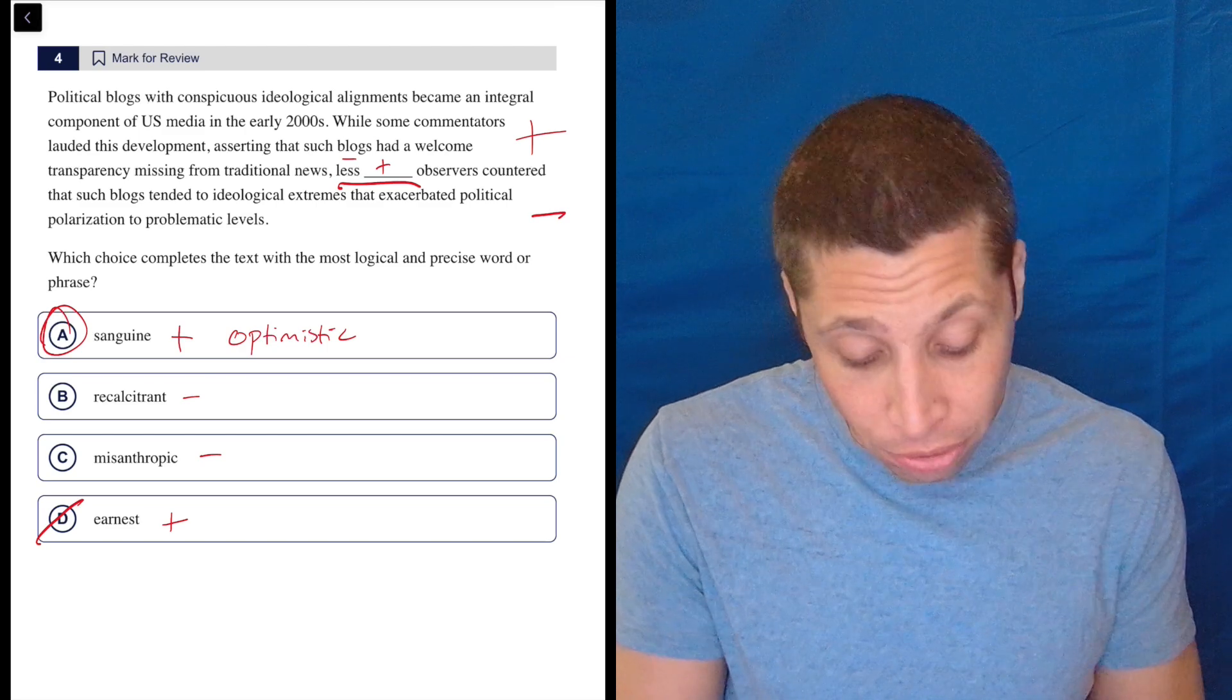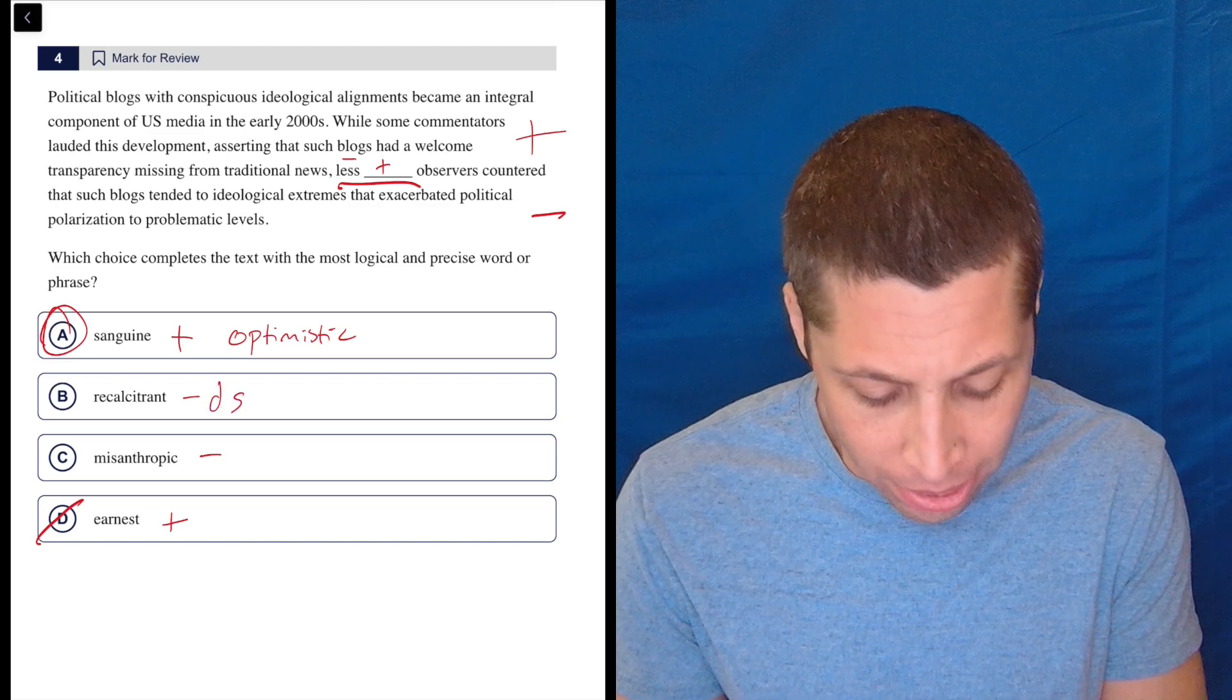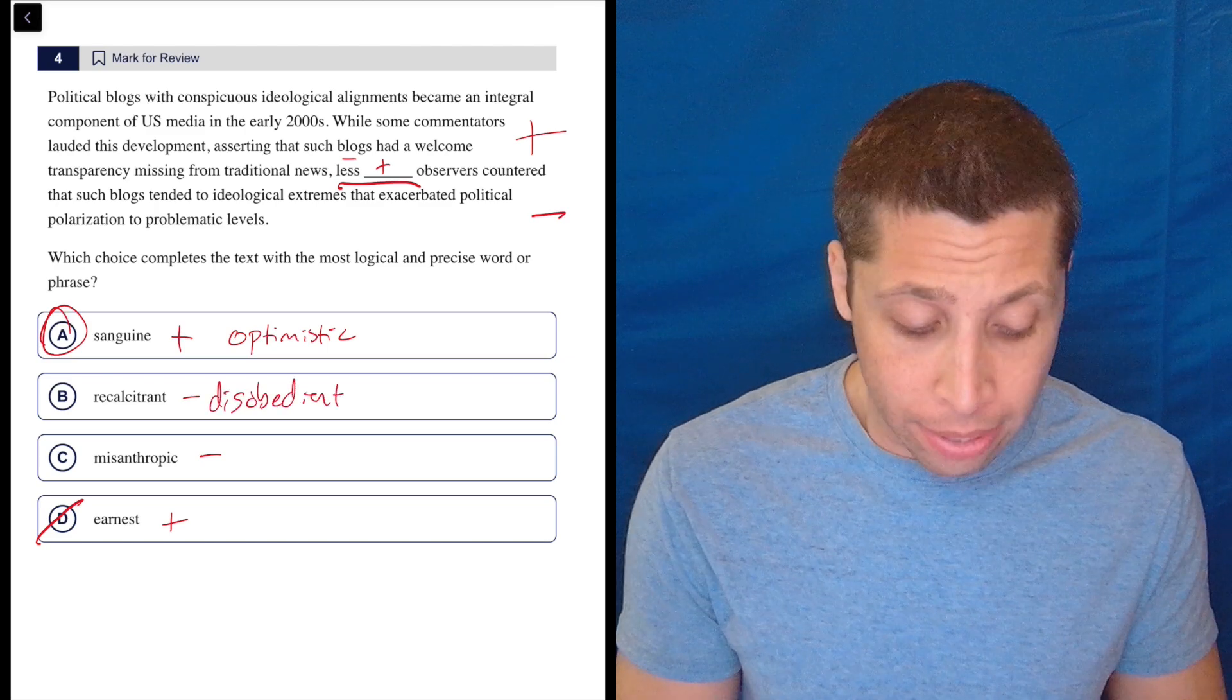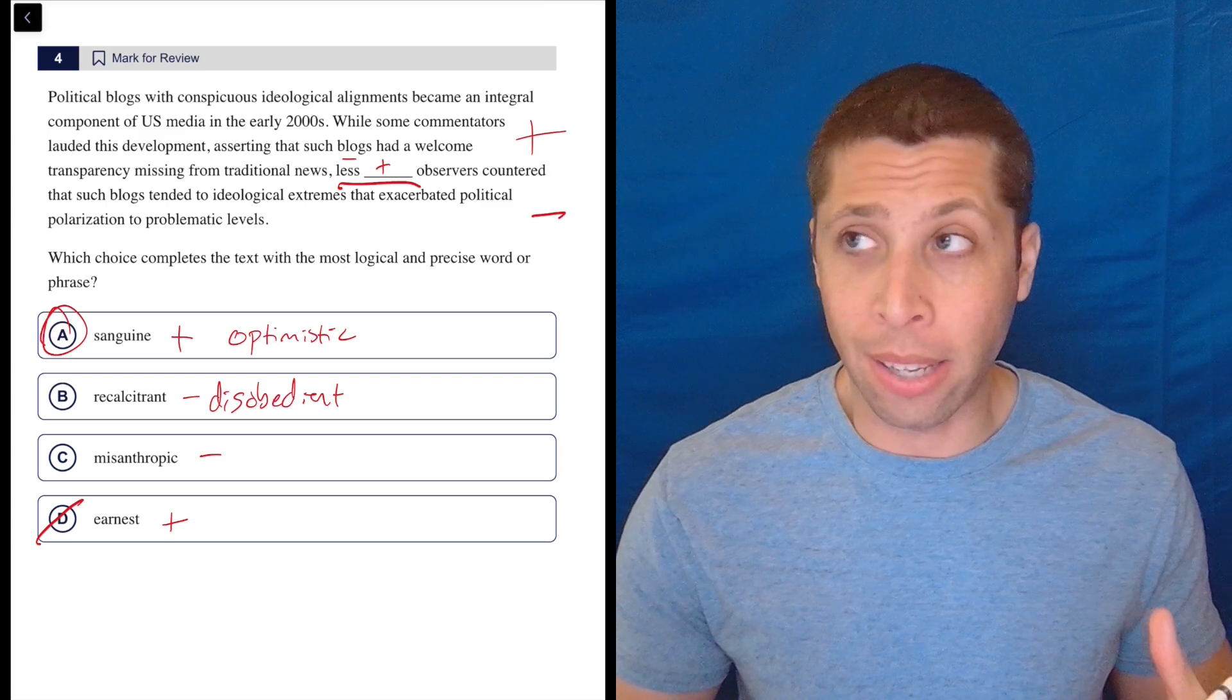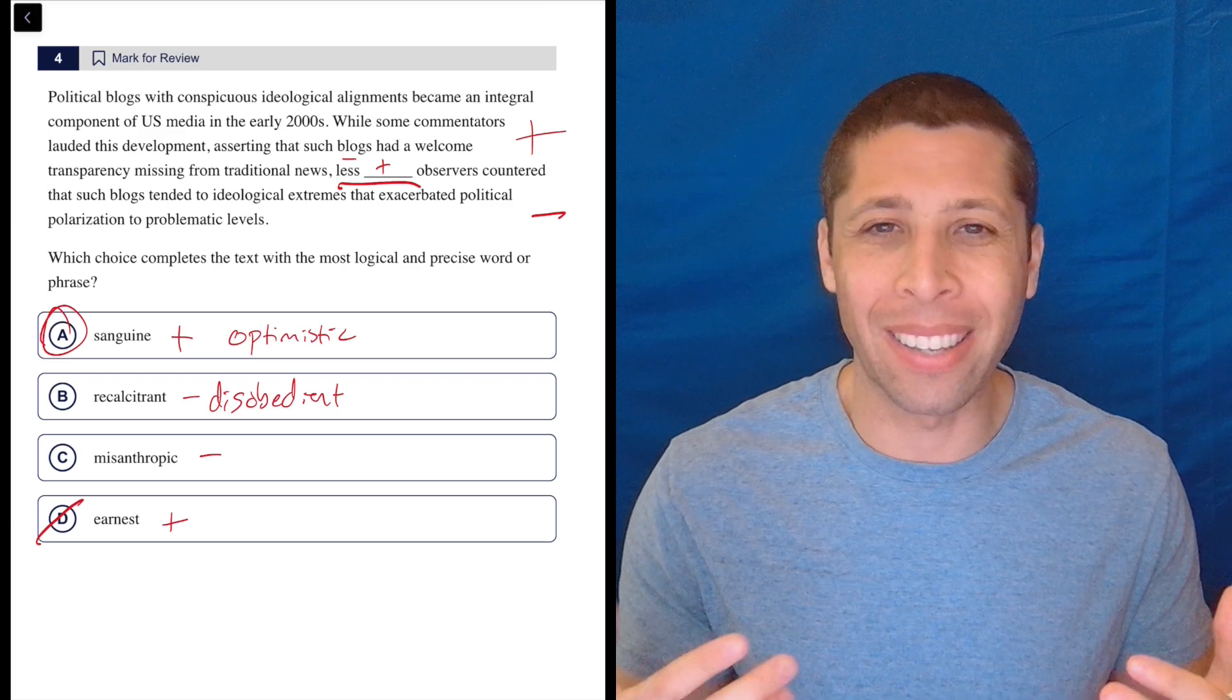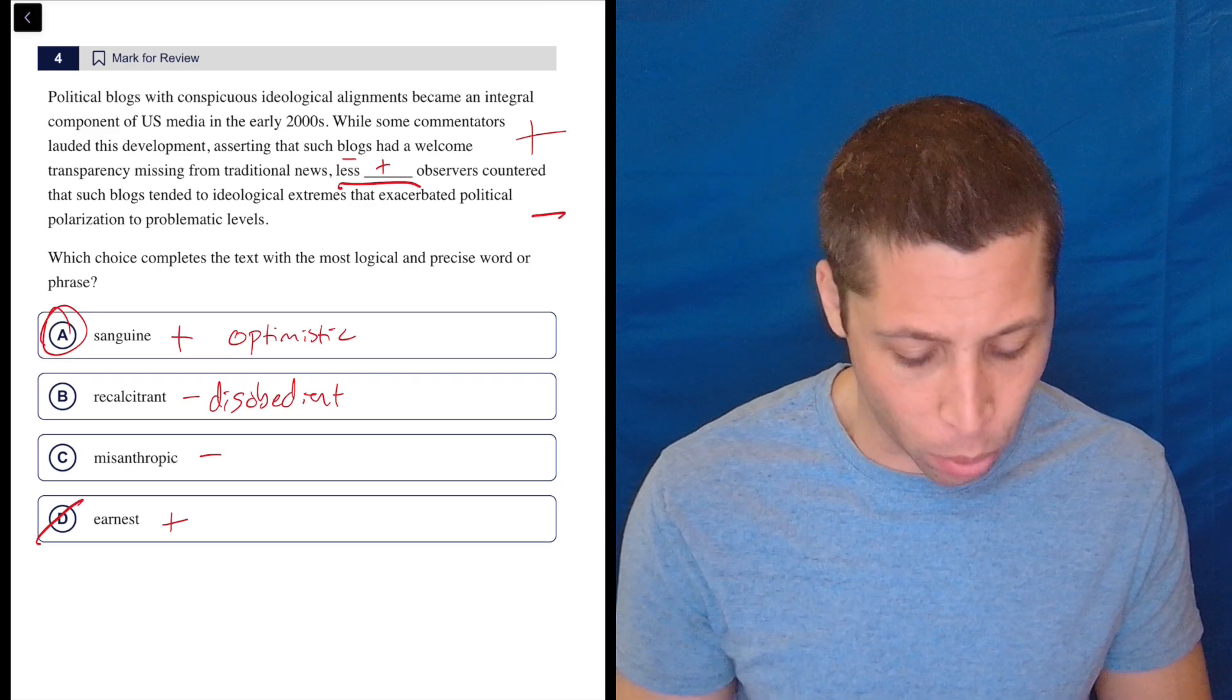So we've got recalcitrant, which kind of means like you're stubborn, you resist authority, you're disobedient. So that's obviously a negative word. And the observers are not like going against people. They're not like disobedient, not means like to argue against. It means to like fight against or rebel against. So it's just not quite right.